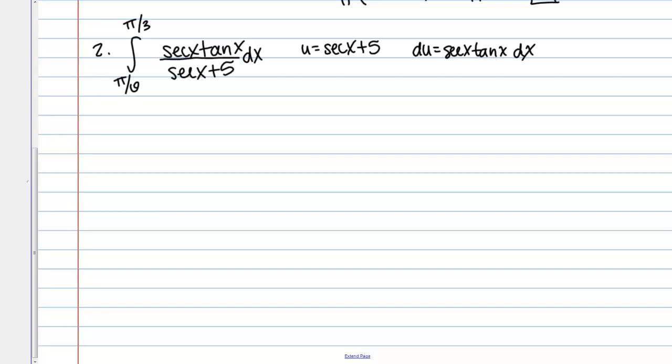That takes care of everything inside the integral. Let's go ahead and transform the bounds as well. We have x equals pi over 6, and I'm going to plug that into my expression for u. u then would be secant of pi over 6 plus 5.